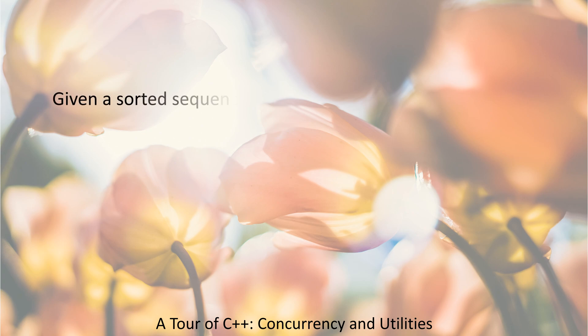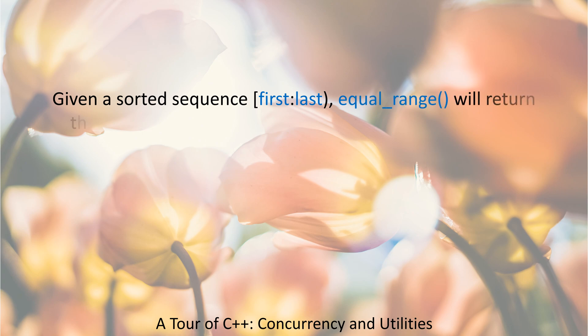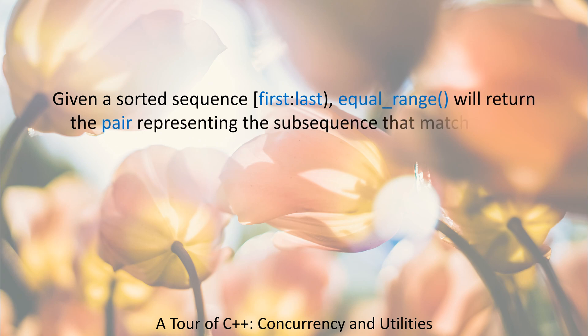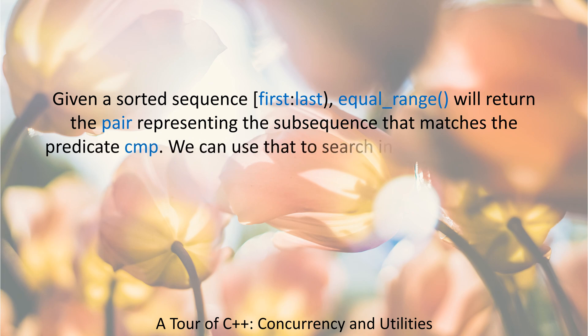Given a sorted sequence [first, last), equal_range will return the pair representing the subsequence that matches the predicate cmp. We can use that to search in a sorted sequence of records.